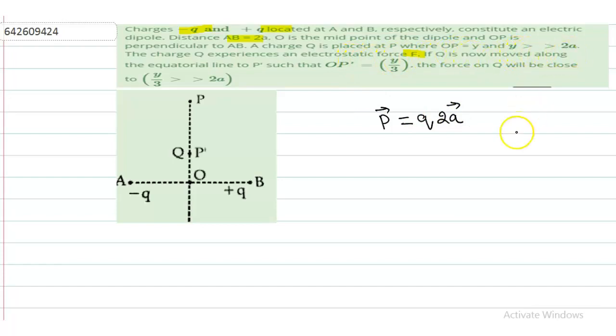Now it is given that y is much much greater than twice of a. If y is much much greater than twice of a, then it is a short dipole. We can consider it is a short dipole. This is the conclusion.